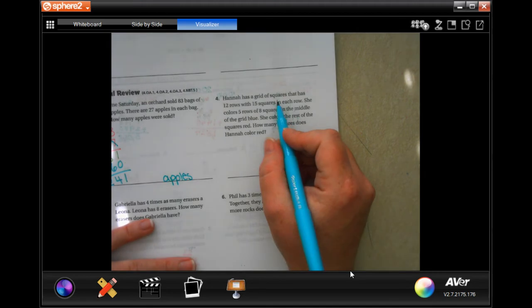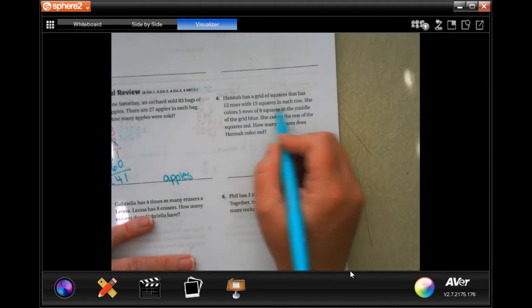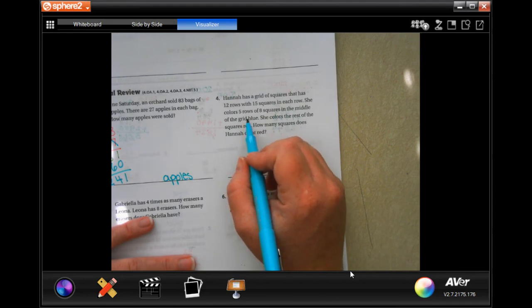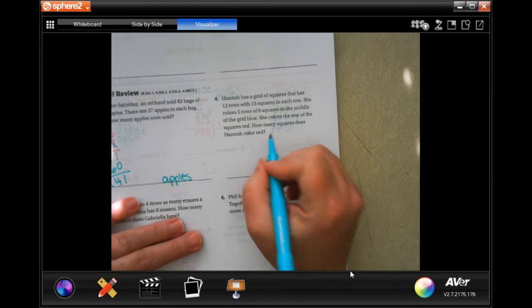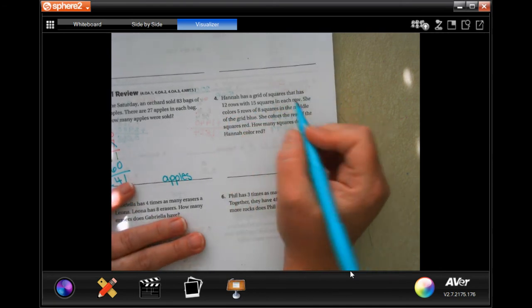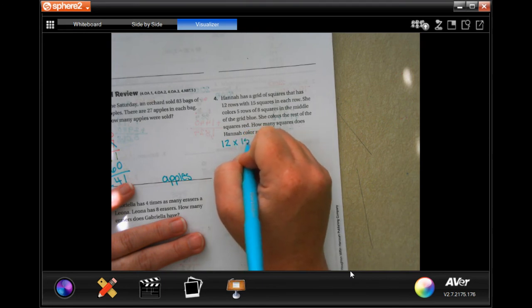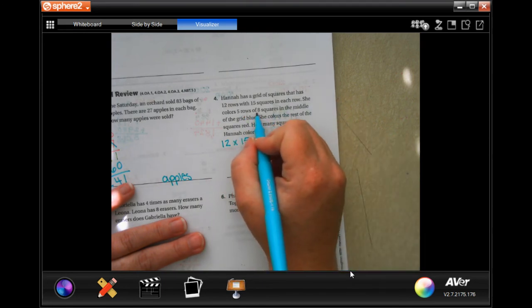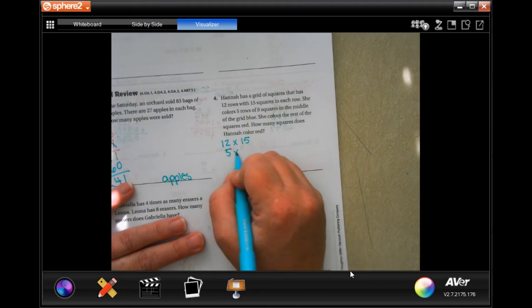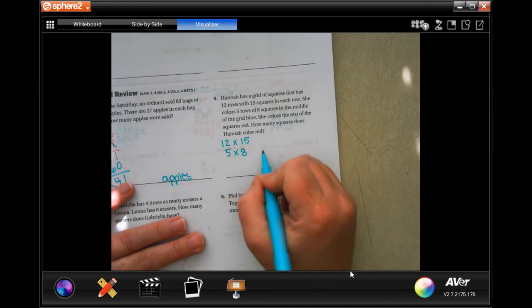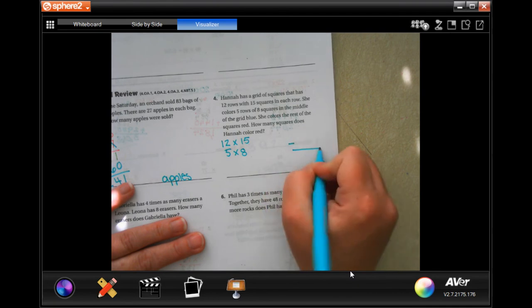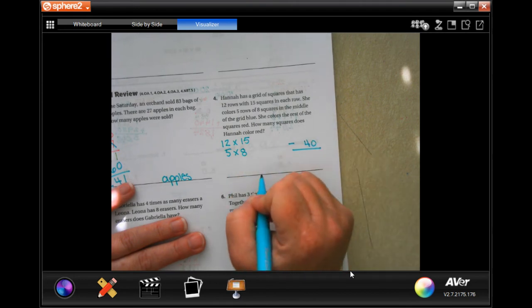Number 4 says, Hannah has a grid of squares that has 12 rows with 15 squares in each row. She colors 5 rows of 8 squares in the middle of the grid blue. She colors the rest of the squares red. How many squares does Hannah color red? So she has 12 rows of 15 squares. She colors 5 rows of 8 squares in the middle blue, the rest red. So we're going to find out how much each of these is, and then we need to find the difference. So we're going to subtract.